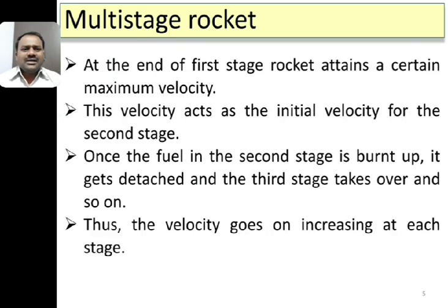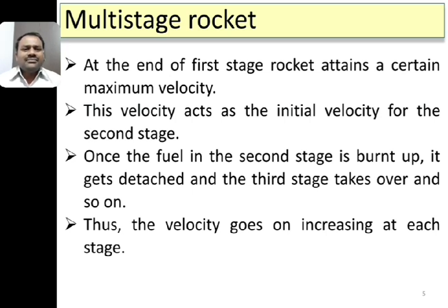For any multi-stage rocket, at the end of the first stage, the rocket attains a certain maximum velocity, just as discussed in the previous video for a single-stage rocket. This velocity acts as the initial velocity for the second stage. Also, once the burning of fuel in the first stage is complete, the container which held the fuel during the first stage is discarded, so that the weight of the rocket decreases, thereby increasing the velocity.